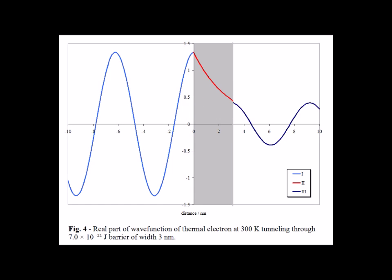In figure 4, the thermal electron is now tunneling through a barrier that has a width of 3 nanometers and a potential of 7.0 times 10 to the minus 21 joules. In this figure and succeeding figures, it allows us to compare the effect of the change in the width of the classically forbidden region on the likelihood that the particle will tunnel through the barrier.